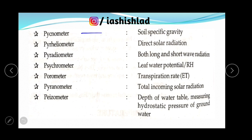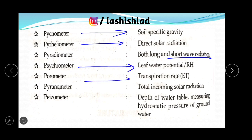Pycnometer measures soil specific gravity. Pyrheliometer measures direct solar radiation. Pyrradiometer measures both long and short wave radiation. Psychrometer measures leaf water potential. Potometer measures transpiration rate. Pyranometer measures total incoming solar radiation. Piezometer measures depth of water table by measuring hydrostatic pressure of groundwater.